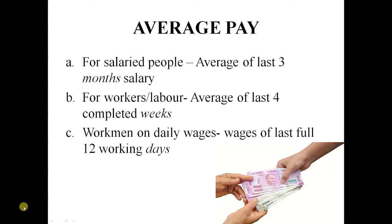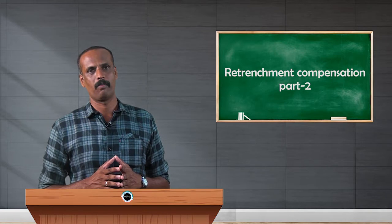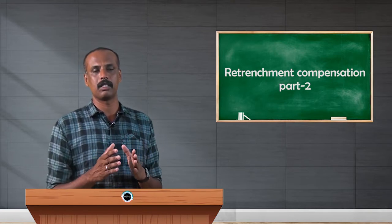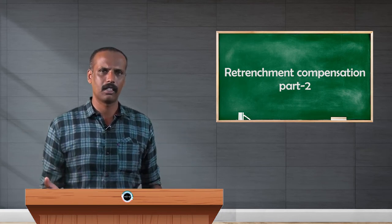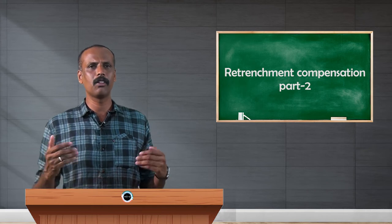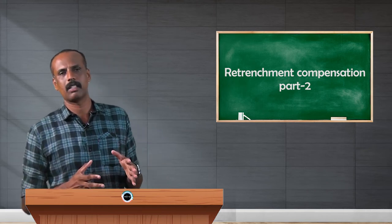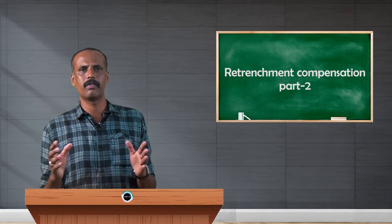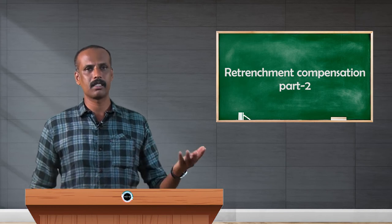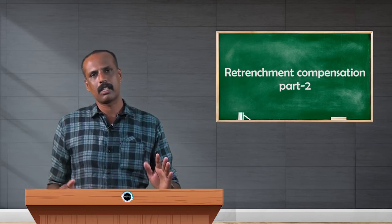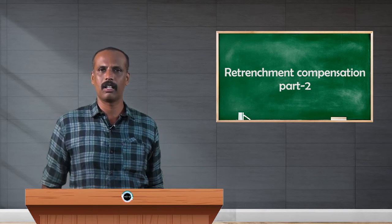We have now discussed what amount is eligible for different kinds of employees — monthly salary employees, weekly salary employees, and daily wages employees — as per the Industrial Disputes Act 1947. As we know, for income tax exemption purposes under the Income Tax Act 1961, the definition of salary differs for different purposes. For example, salary for HRA is different, for gratuity is different, for leave encashment is different, and for commutation of pension is different.